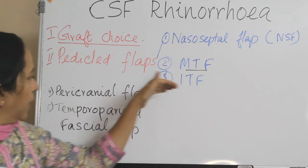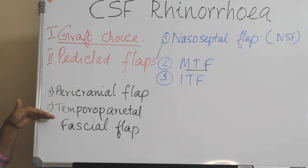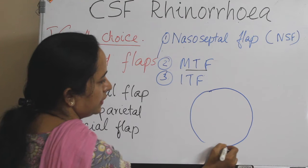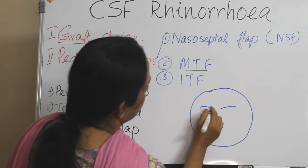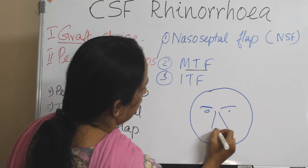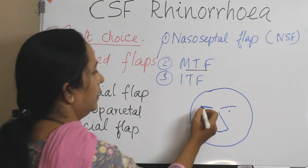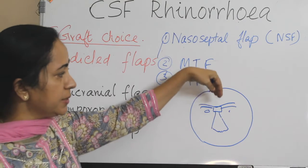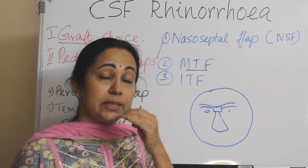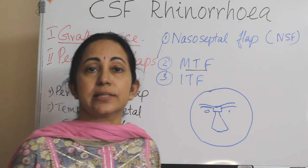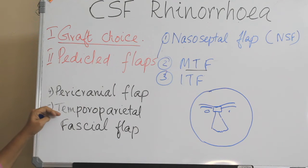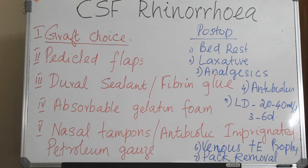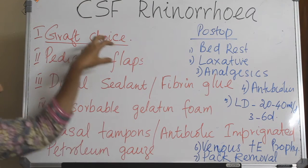These three — nasoseptal, middle turbinate, and inferior turbinate — are intranasal flaps. Pericranial flaps and temporoparietal fascial flaps are also pedicle flaps. For the pericranial flap, a bicoronal incision is given, a window is created and drilled at the nasion, and through that, the pericranial flap can be rotated into the nasal cavity. This is ideal if reconstruction is being done alongside a frontal craniotomy procedure. A temporoparietal fascial flap is also a pedicle flap option. To further reinforce reconstruction, some use a dural sealant or fibrin glue over the pedicle flap.